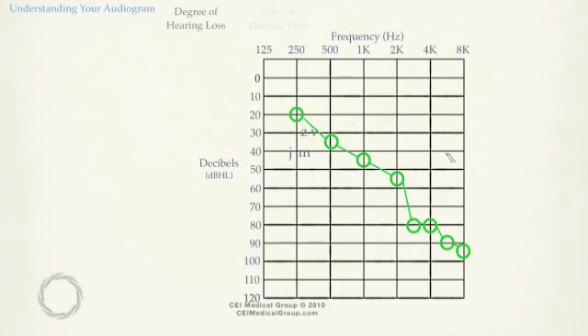Right now, you're looking at the frequencies where the vowels and consonants appear. If the softest sounds you can hear are below these letters, you will not be able to hear speech.